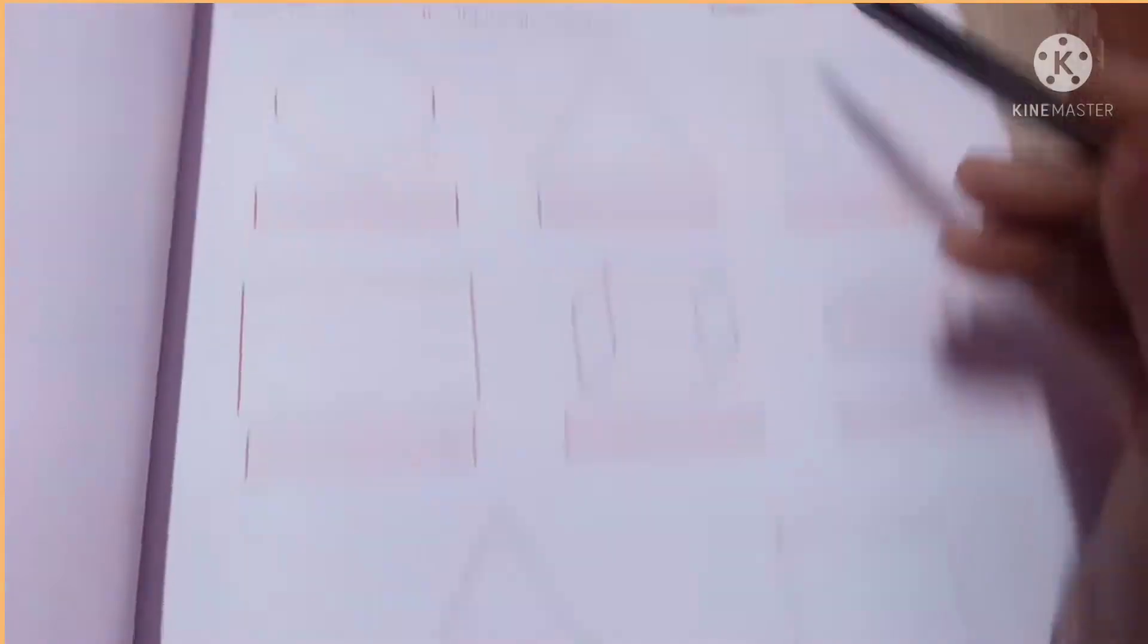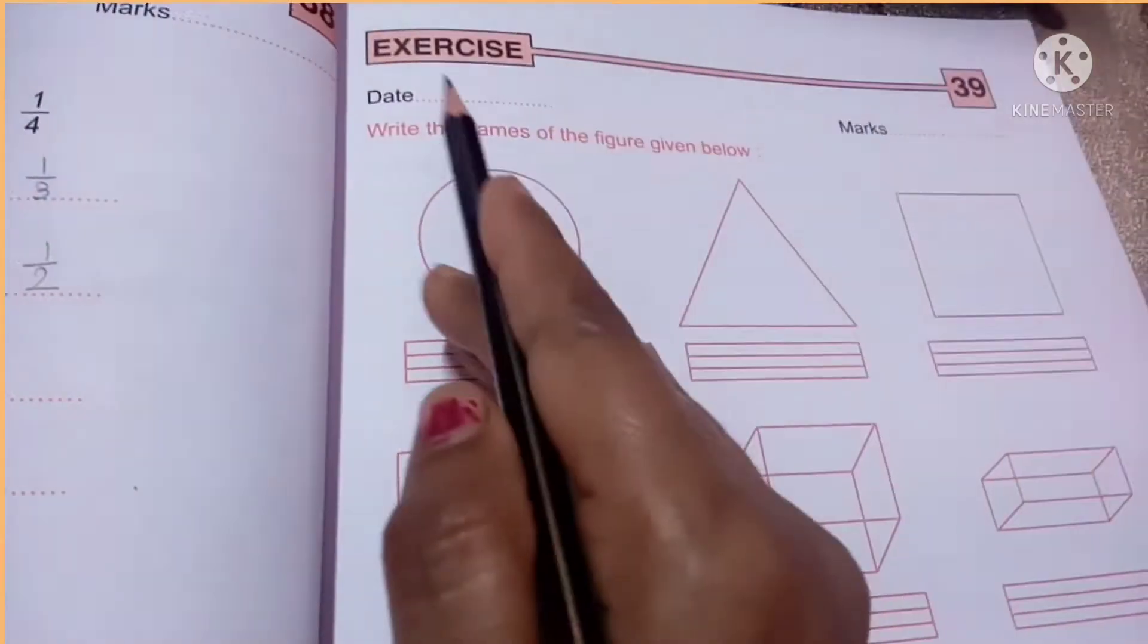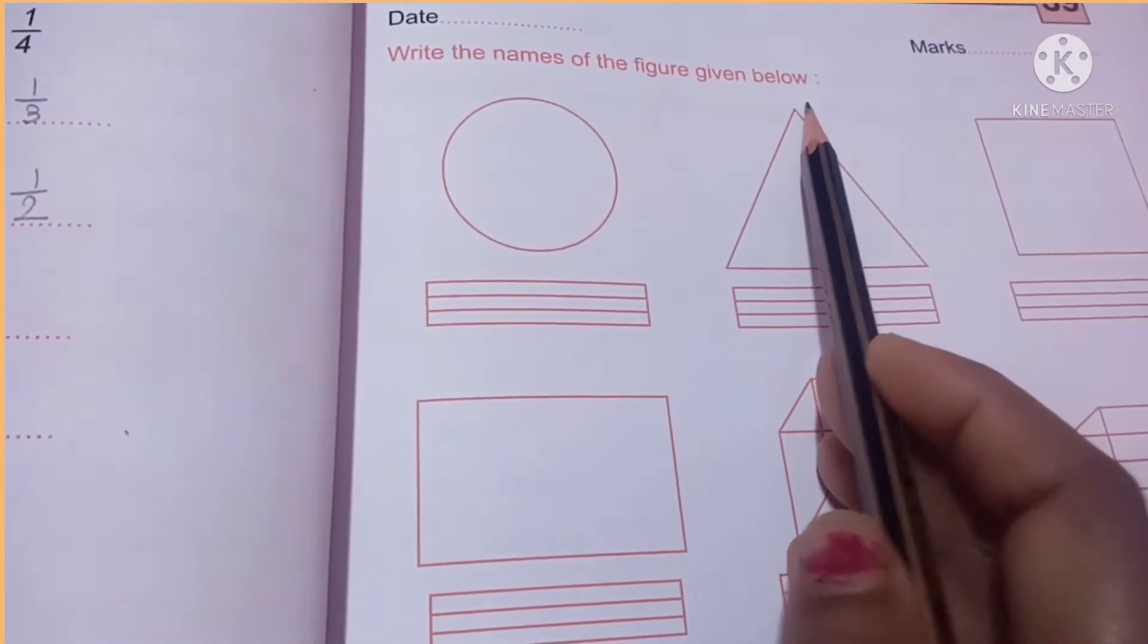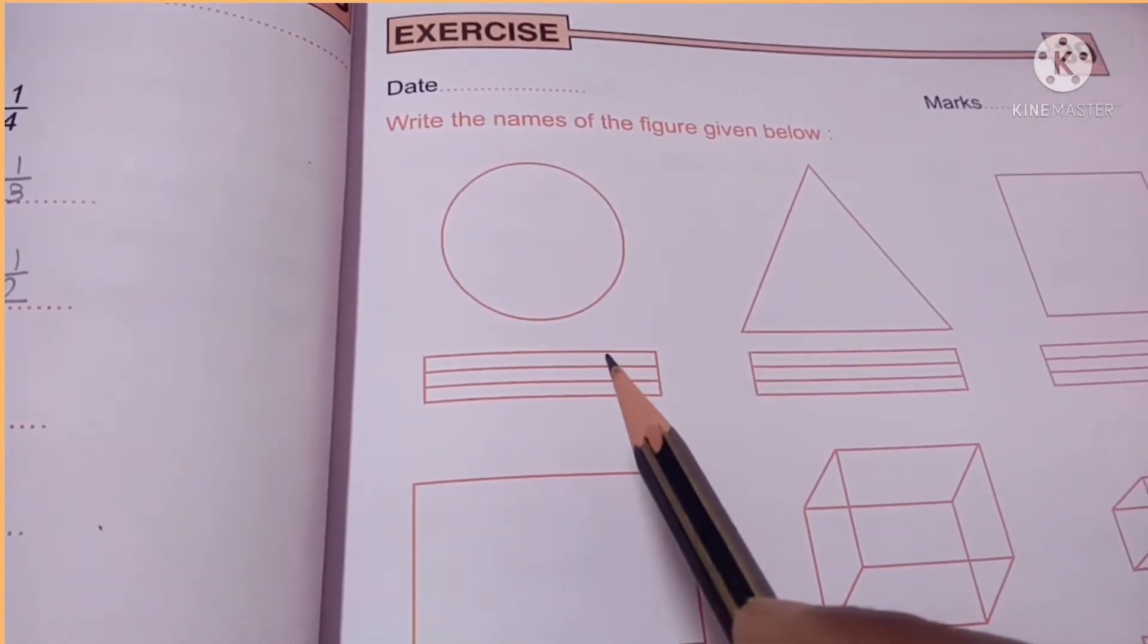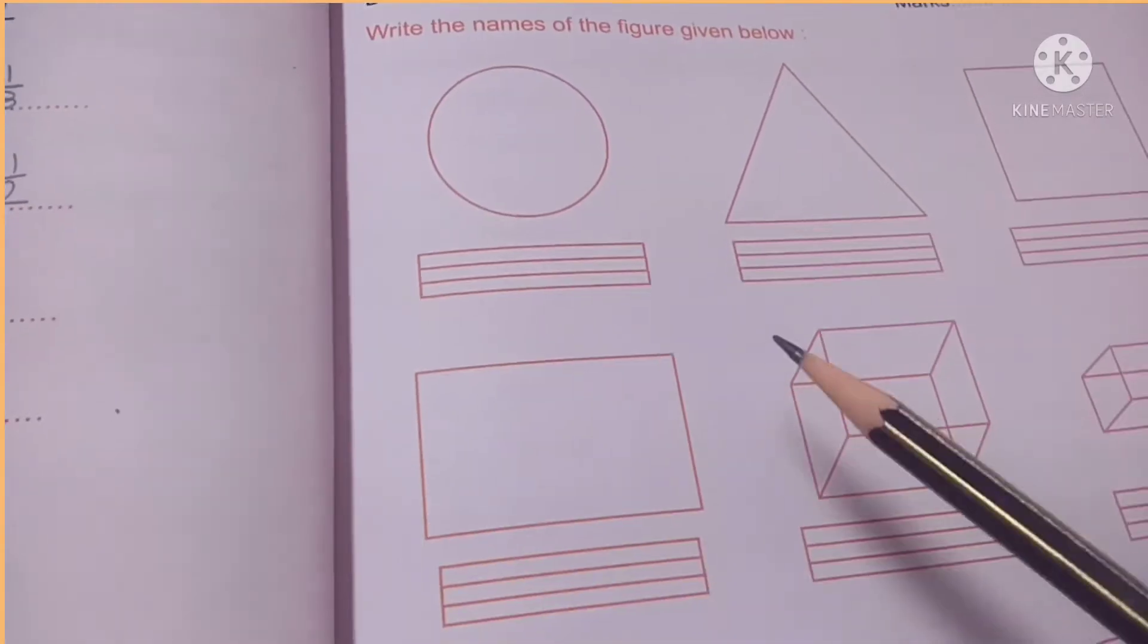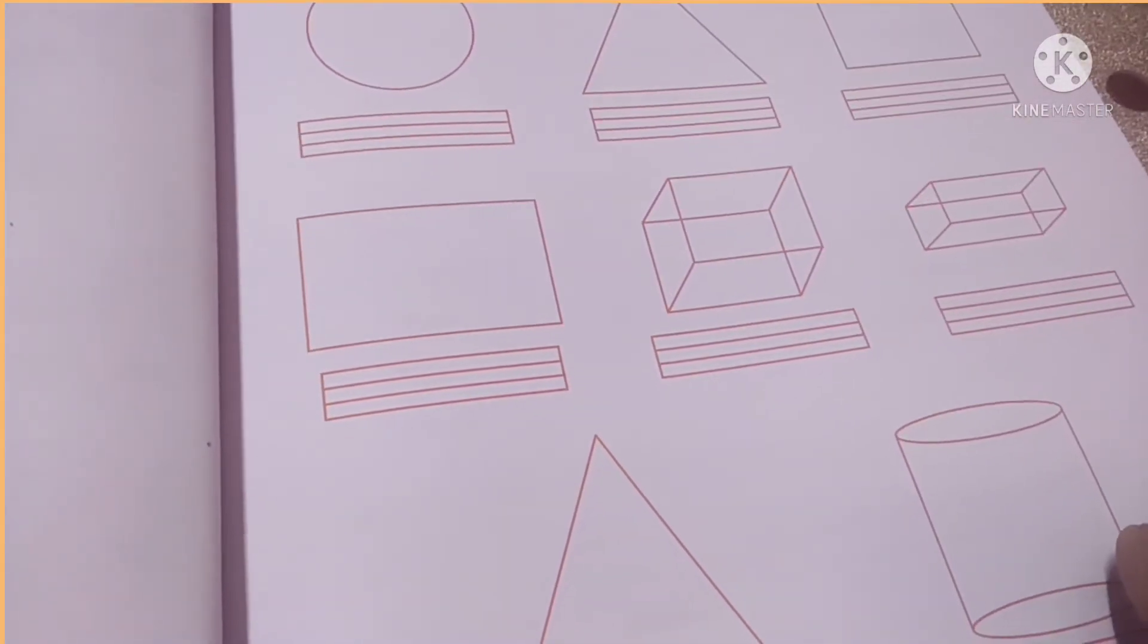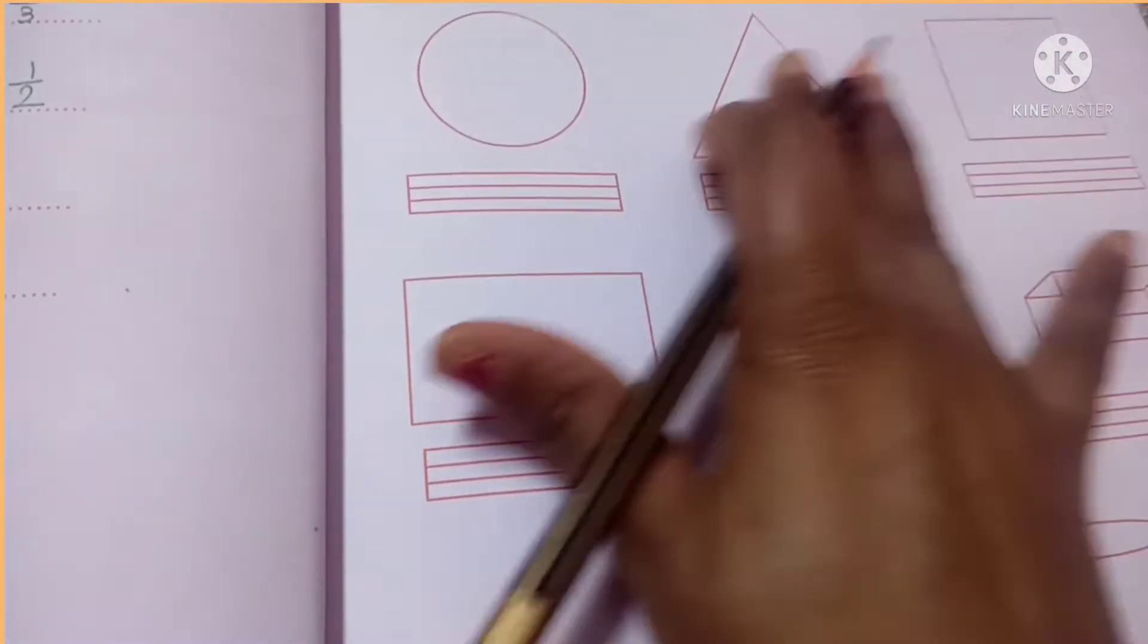Okay children, now you can see here this is page number 47 and we will be doing exercise number 39. You will write the date over here and then you see write the names of the figures given below. In New Maths Explorer book also we are doing geometrical shapes. So we have learnt about the plane shapes. You can identify these shapes now. Let us write the names of these plane shapes first. Over here you have the solid shapes also given. So we will write their names later.